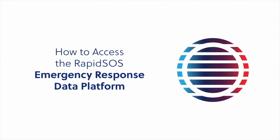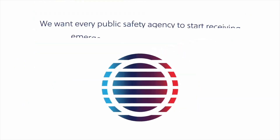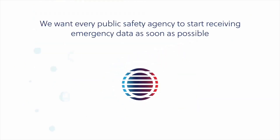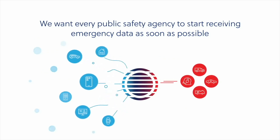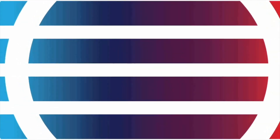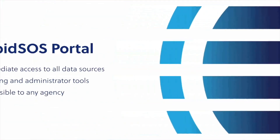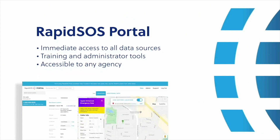How to Access the Emergency Response Data Platform. Any public safety agency can access life-saving emergency data through the RapidSOS Emergency Response Data Platform. There are two ways of doing so. RapidSOS Portal is a powerful web-based tool that enables you to manage emergencies and access location and supplemental data for every call in your jurisdiction.